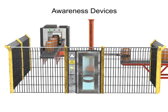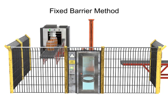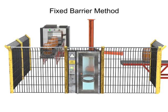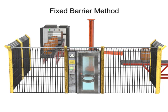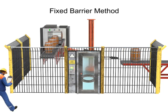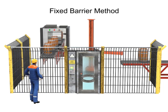Guarding methods are used to prevent unauthorized access to the work envelope. The simplest is known as the fixed barrier method, such as a fence or wall. The physical barrier is put around the work area and is configured in such a way that prevents access through, over, or around without a special key or access code.